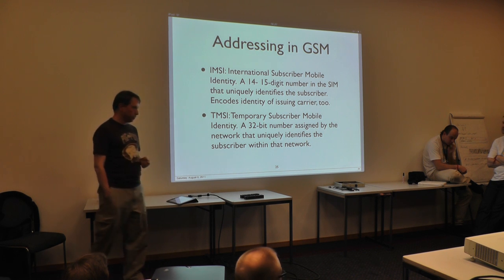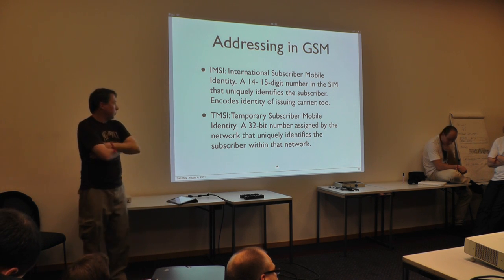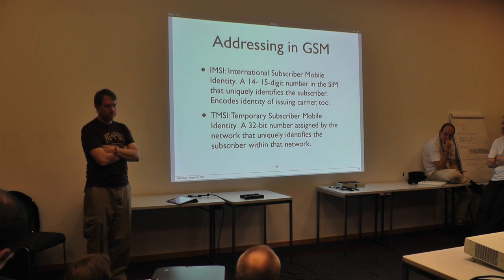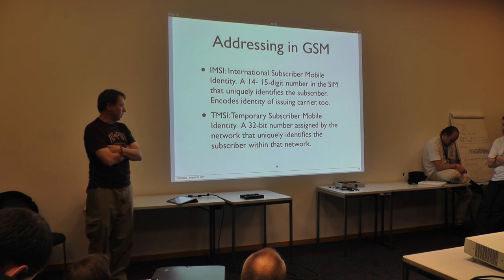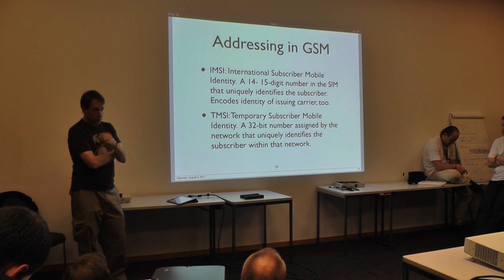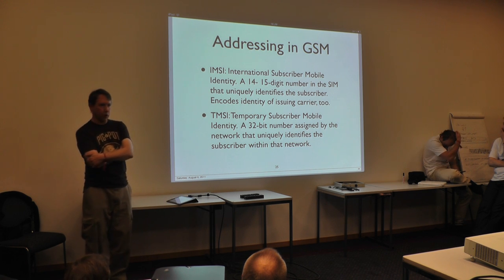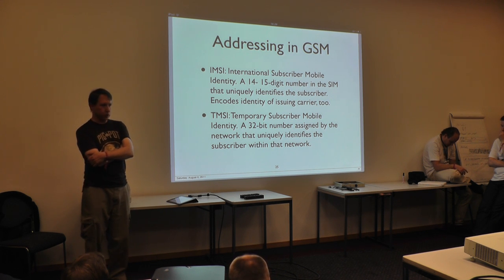Address types in GSM: The IMSI is usually a 15-digit number stored in your SIM card — it's your identity from the standpoint of the telephone network. The upper digits of the IMSI encode the issuing carrier, so by watching IMSIs fly by on a paging channel you can tell what carrier in what country issued the SIM. For example, Range Networks running a test network in San Francisco in the DCS-1800 band can spot foreign visitors without US roaming service by the network they last registered on.